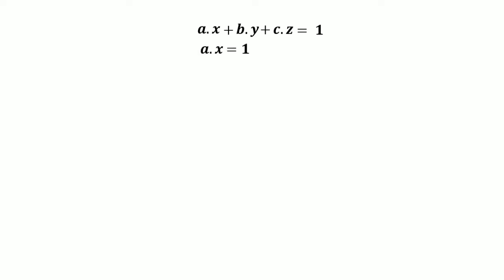Starting with equation one, we subtract b times y and c times z from both sides, giving a times x equals 1 minus b times y minus c times z. Multiplying both sides by a, we get a squared times x equals a minus ab·y minus ac·z.